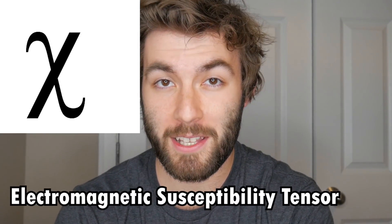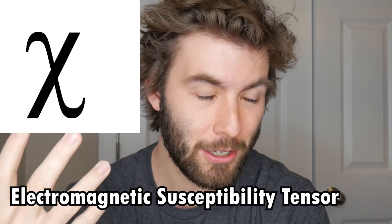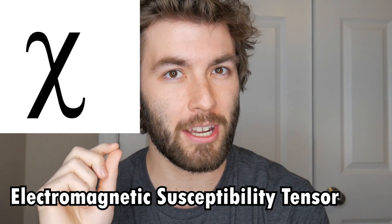Phi can be used for two things: either the azimuthal angle going from the x-axis up to the y-axis, or the time part of the solution to the Schrödinger equation. You can also see phi used to denote some kind of scalar potential. The Greek letter chi can be used to describe electromagnetic susceptibility — if you'd like to know more, check out the video on two-index tensors.